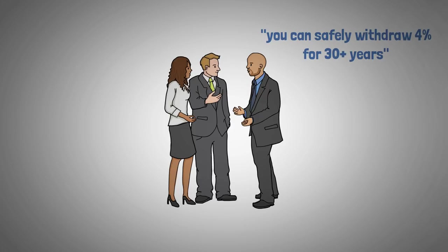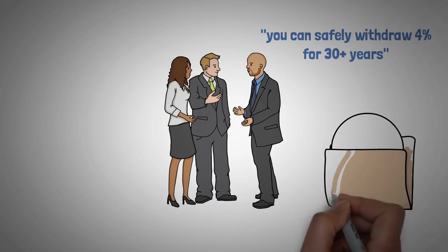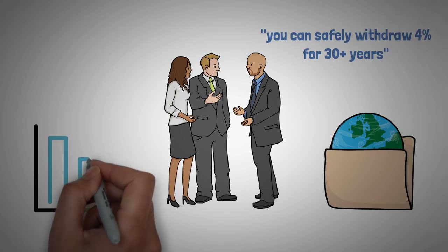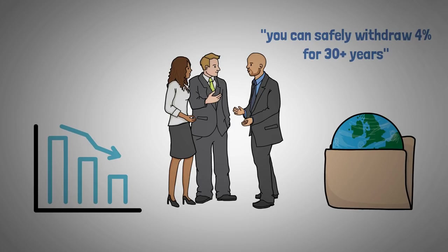This figure, found by the Trinity study, suggests that withdrawing 4% from your investments every single year would be sustainable for 30 years or more. The study analyzed various markets throughout history and found that this withdrawal rate is still considered safe, even if you were to retire during the worst possible time in stock market history.